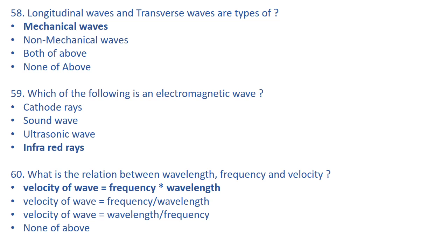Longitudinal waves and transverse waves are types of mechanical waves. Which of the following is an electromagnetic wave? Cathode rays, sound wave, ultrasonic wave, or infrared rays? The right answer is infrared rays — infrared rays are electromagnetic waves.